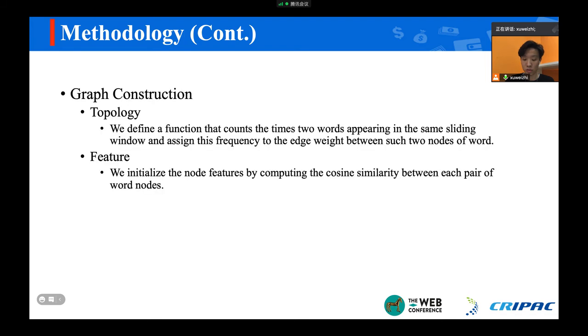Next, I will introduce the details in each part of the proposed method. For graph construction, we obtain graph structure based on the word occurrence in a fixed sliding window, then generate the initial node features according to similarity between words in the query and the document.